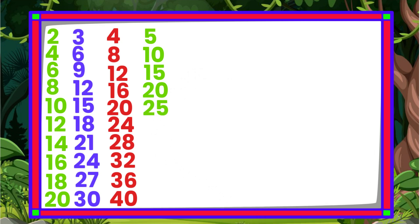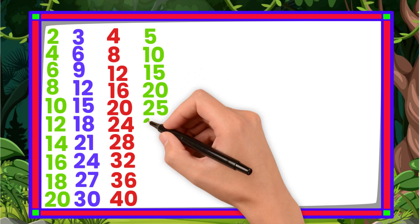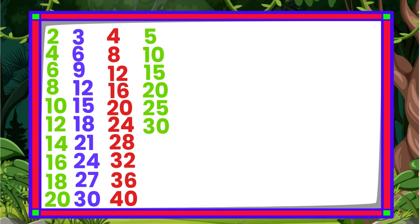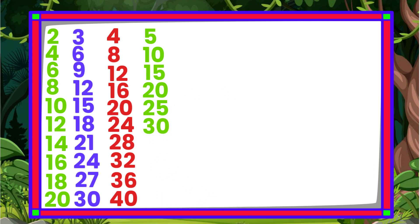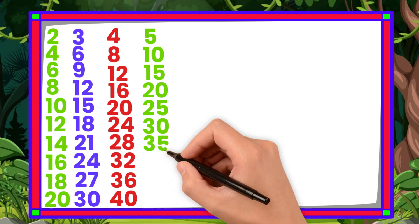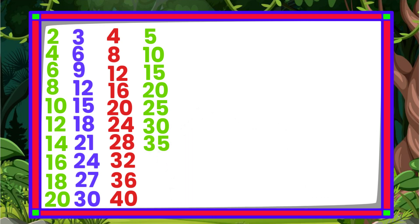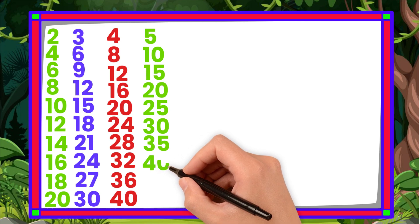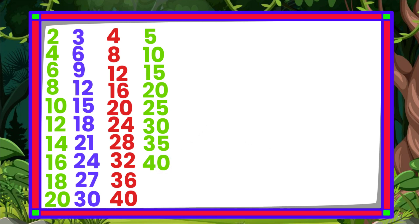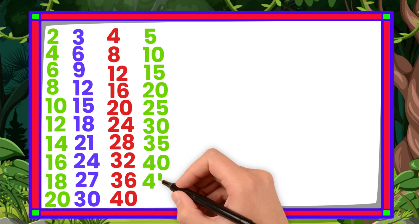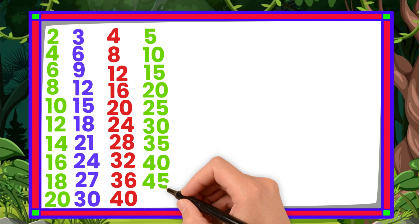5 6s are 30. 5 7s are 35. 5 8s are 40. 5 9s are 45. 5 10s are 50.